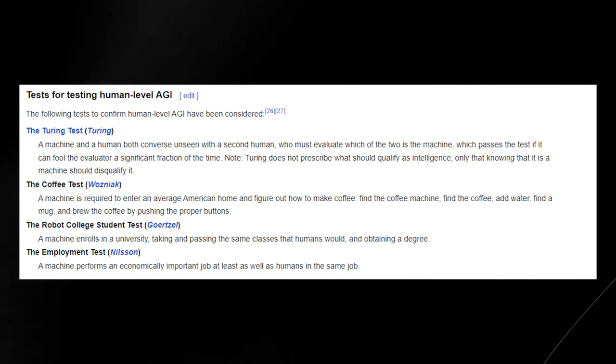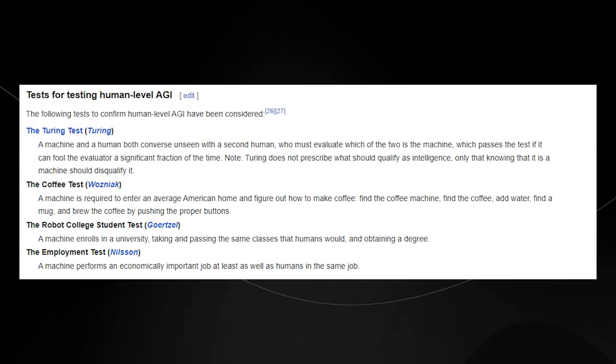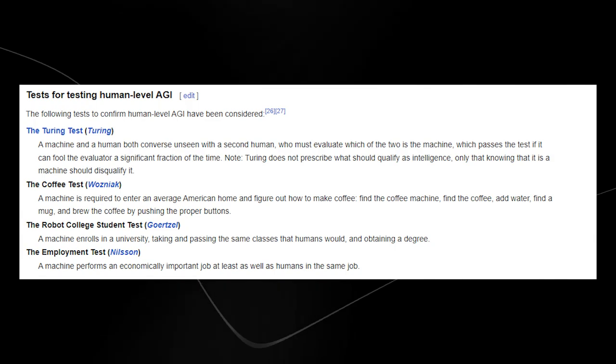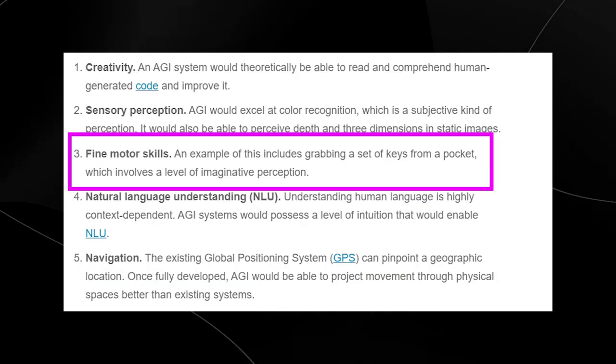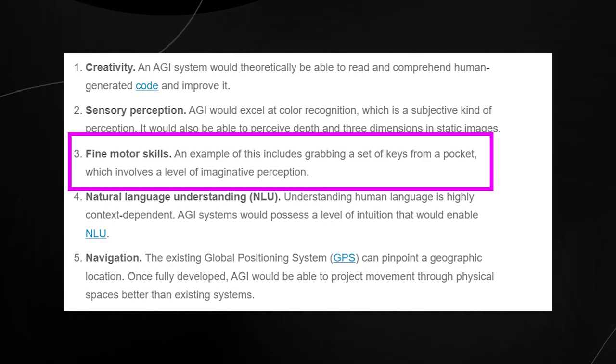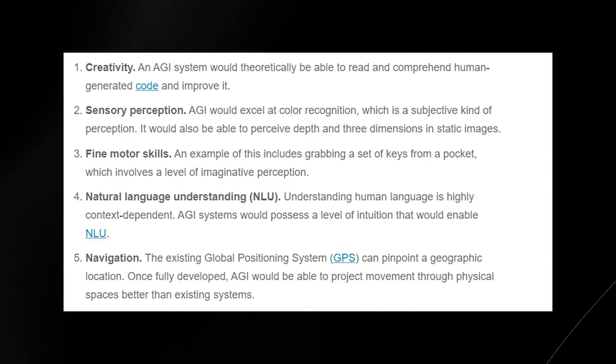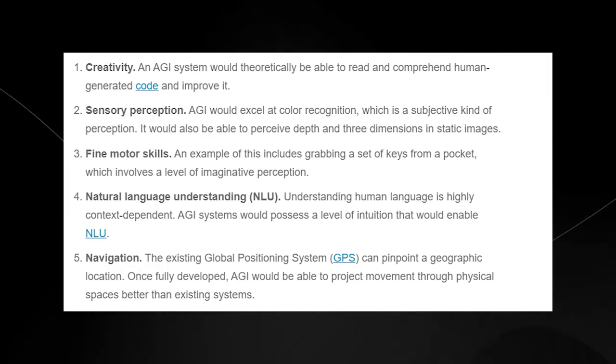You could argue that GPT-4 already could pass the robot college student test. With the other tests, some of them are very easy for GPT-4 to pass, such as the Turing test. But for other examples, they do require GPT-4 to have a physical body. Fine motor skills, such as interacting with the environment in a very unique and specific way, is something that we don't see yet on GPT-4.